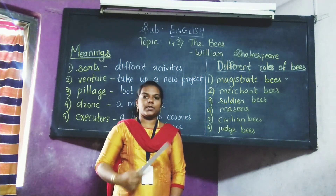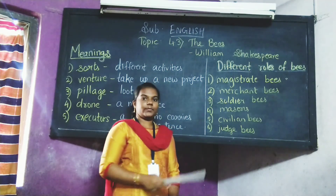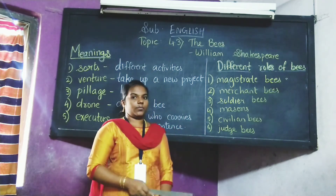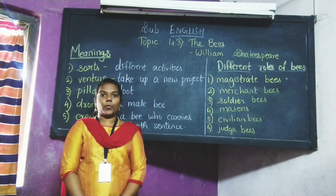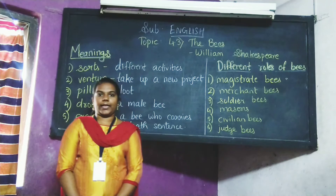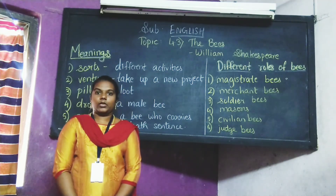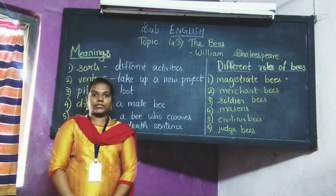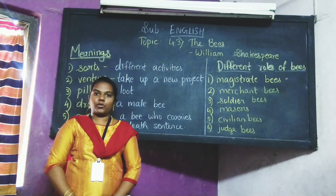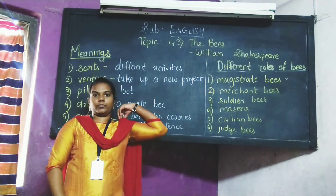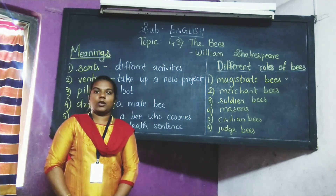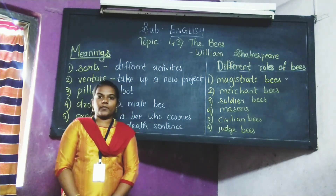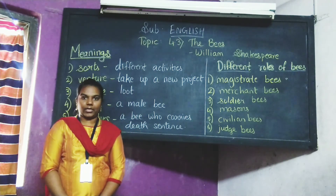The drone is always sleeping and yawning, not doing any work. So the judge bee hands the male bee — the drone — to the executor bee. The executor bee carries the death sentence. William Shakespeare tells us about the order of life, that we should work in unity — unity is strength. If we work in unity, then the task or work will be carried out perfectly and without any problems.